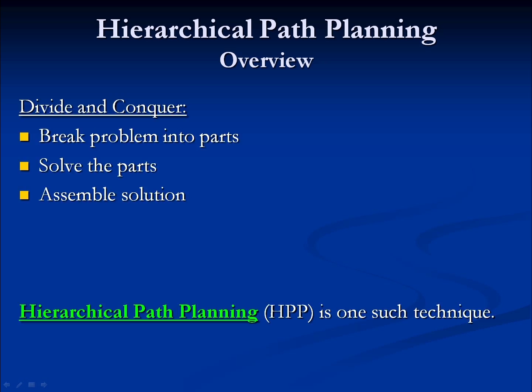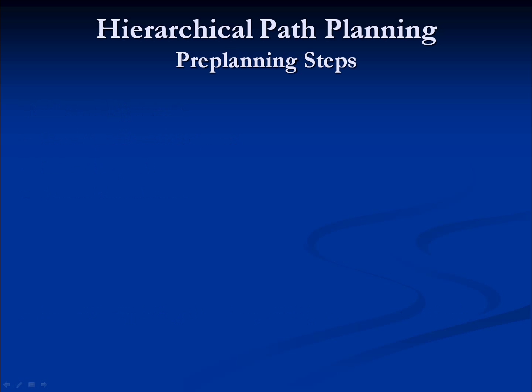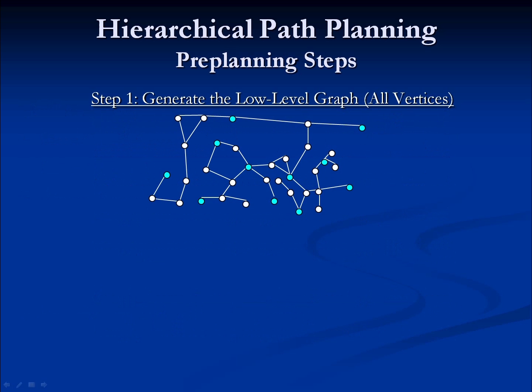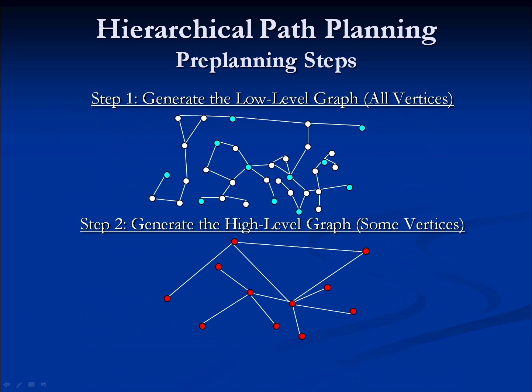The general idea is that we start by building a search graph with all possible nodes and vertices that our AI agents can navigate between — we'll call that our low-level graph. We'll then build higher-level graphs. In the example on the slides, we're going to have two layers, a low-level graph and a high-level graph, but we could have as many layers as would be useful.